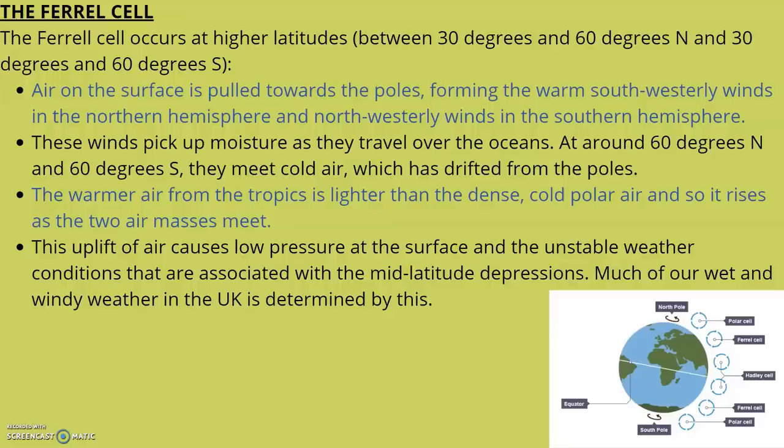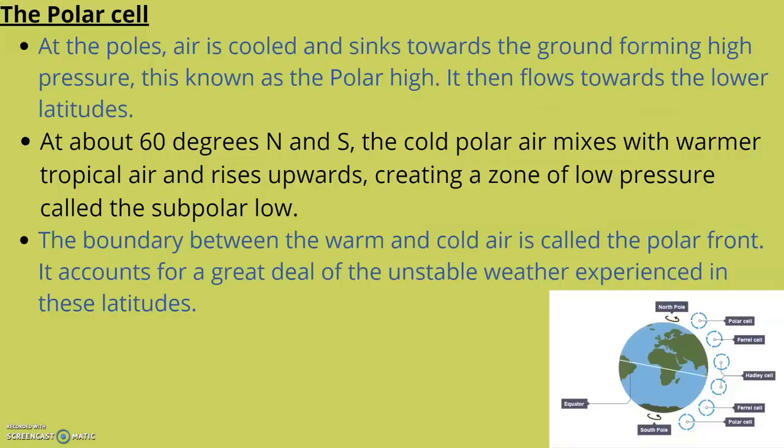Much of our wet and windy weather in the UK is due to this. Finally, the polar cell. At the poles, air is cooled. Why is it coldest at the poles? Because due to the angle of the Earth's tilt, that's where the least solar radiation occurs.